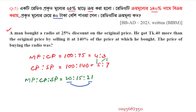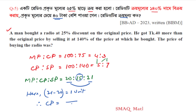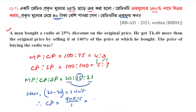The difference between SP and MP is 21 minus 20 equals 1 unit, which equals 40 taka. Therefore CP equals 15 units, and 15 × 40 equals 600 taka. So the cost price of the radio is 600 taka.